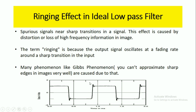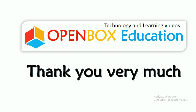Here is an example of the ringing effect. For this signal, at the sharp transitions, the signal oscillates — as you can see in this image, at this part the signal is oscillated. These oscillations at the sharp transitions are called the ringing effect, and they are caused by spurious signals near sharp transitions.